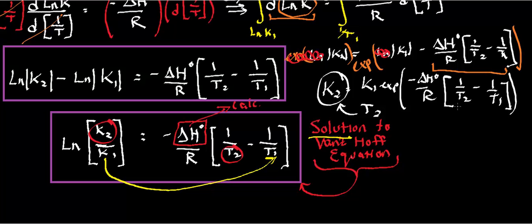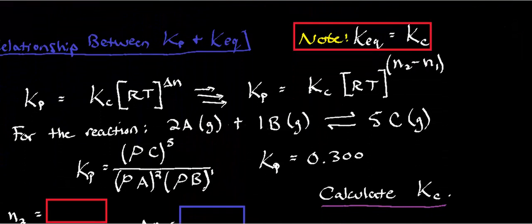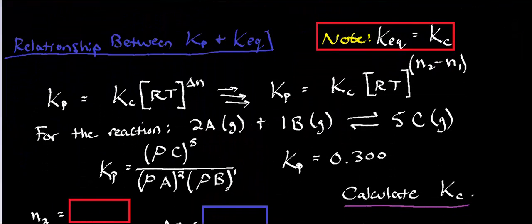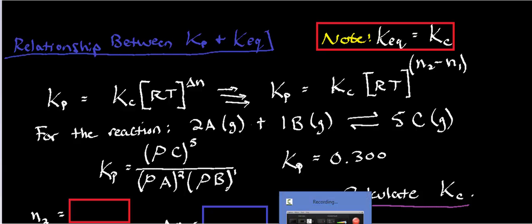All right, so that's going to conclude this video, and in another video, we'll look at an example of this with actual numbers so you can get more of a sense of how to do it. After that, what we're going to look at is how you relate kp and keq. We're going to look at how you relate those two quantities in another video, but hopefully that gave you a sense of the variation of equilibrium constants with temperature. See you in the next video.